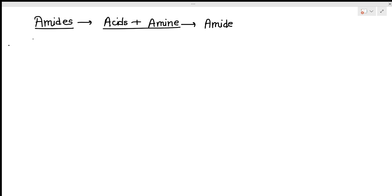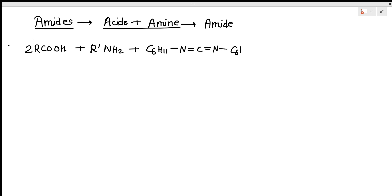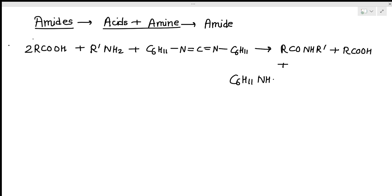For amide synthesis: R-COOH plus R'-NH2 plus DCC (C6H11-N=C=N-C6H11) gives R-CO-NH-R' (the amide) plus C6H11-NH-C(=O)-NH-C6H11 (dicyclohexylurea). The mechanism follows: R-C(=O)-O⁻ attacks the DCC to form R-C(=O)-O-C(=NH-C6H11)=N-C6H11, the same activated intermediate seen in esterification.